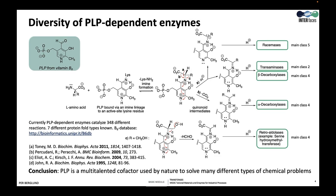PLP is an important and multi-talented coenzyme that is used also by other enzymes than the transferases. This is a fascinating example of how nature is using the same coenzyme PLP to solve very diverse chemical problems such as racemization, transamination, beta or alpha decarboxylation, or aldol additions. On this slide you see these different enzymes, and the role of PLP is to act mainly as an electron sink that can fine-tune the electron density and, together with the enzyme active site, orient the substrate so that the correct reaction takes place.